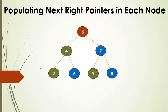For right children, to populate the next pointer for node six — which should point to nine — we need to know its parent, which is four. Then we need its next pointer, which is seven. Then we go to the left child of seven, which is nine, and assign that to the next pointer of six. So we need to maintain the parent node for every node, and process each node before going to its children. This is nothing but a pre-order traversal.